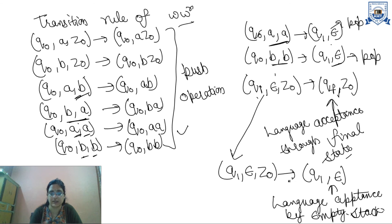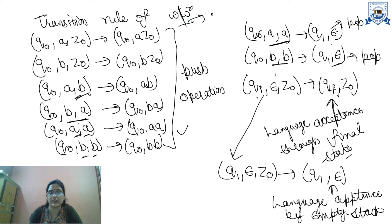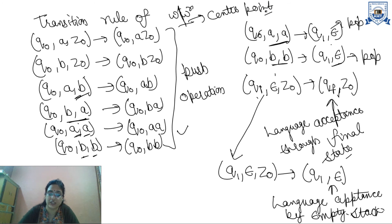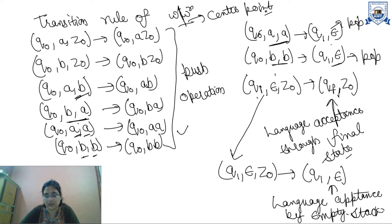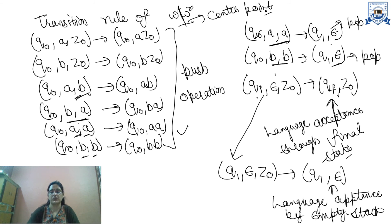This is non-deterministic pushdown automata. The main point is: in the language ww^r, we do not know the center point — the center point is missing. So we do not know when to push and when to pop. In deterministic PDA for wcw^r, 'c' is the center point, so we push before 'c' and pop after 'c'. But here with no center point, more than one case must be considered — for same input symbols we perform both push and pop operations. Thank you.